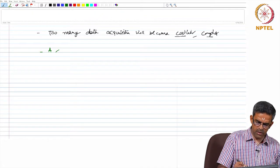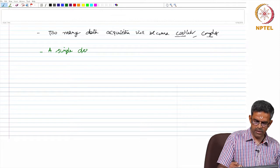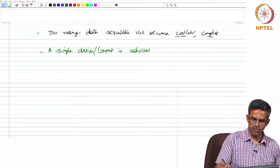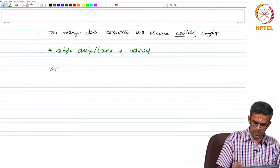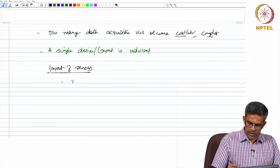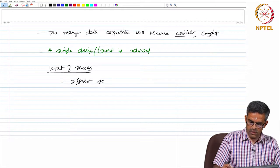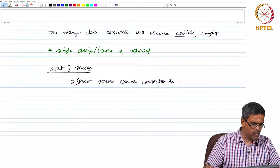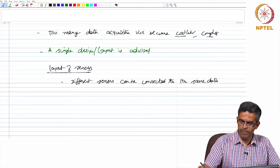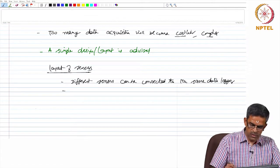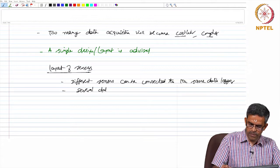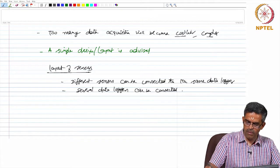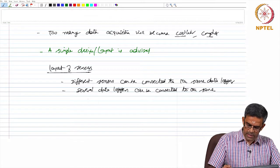Therefore, a simple design or layout is advised. Let us talk about layout of sensors. Now, interestingly, different sensors can be connected to the same data logger.